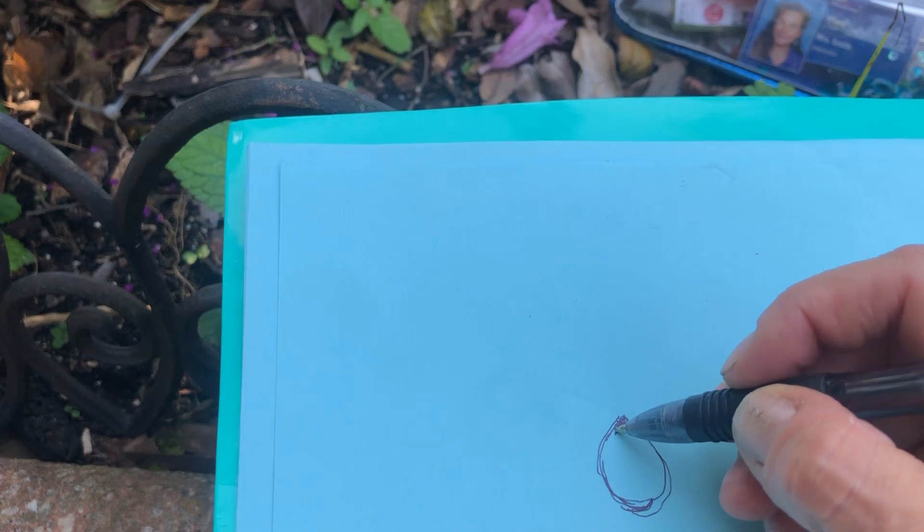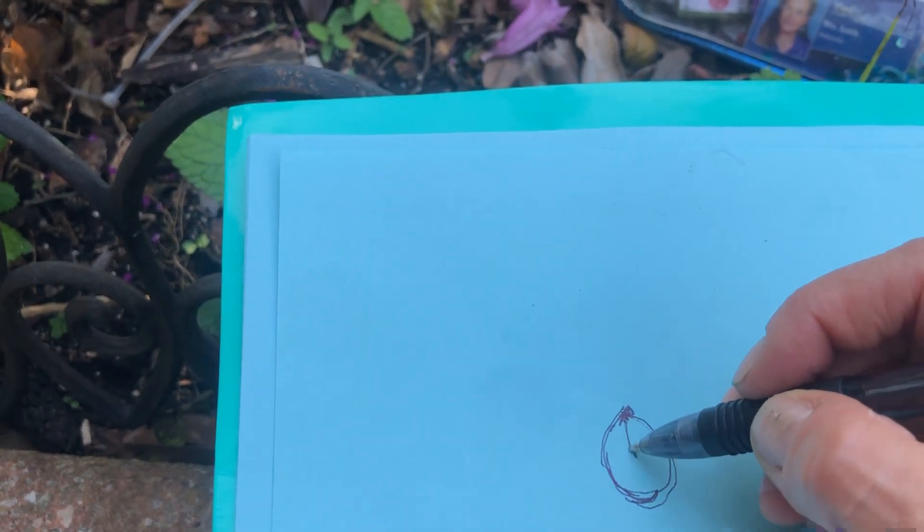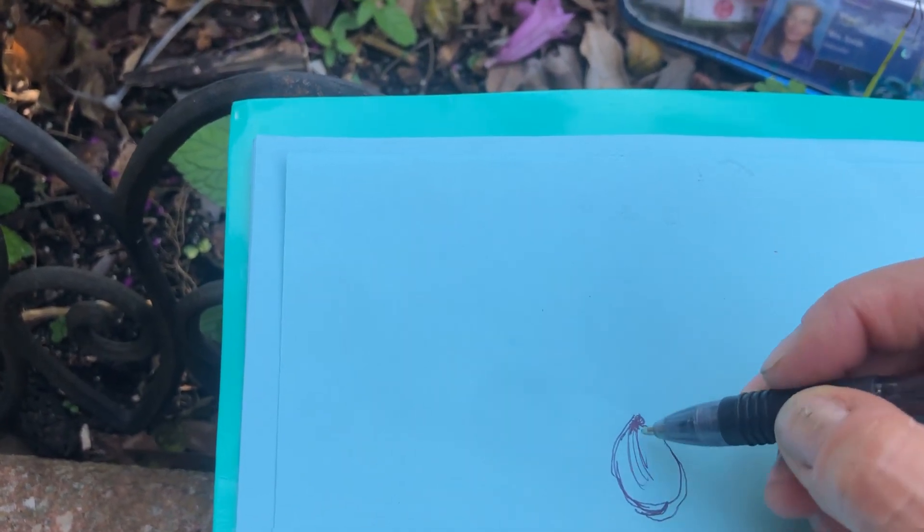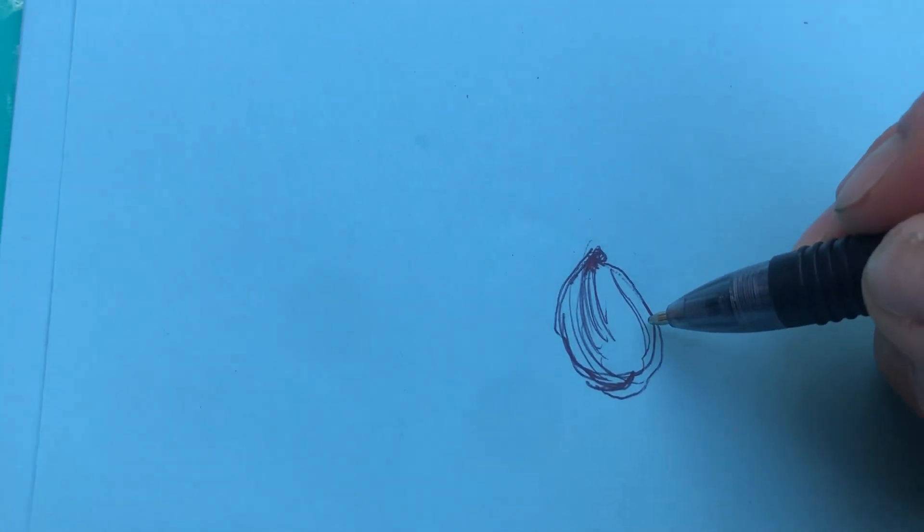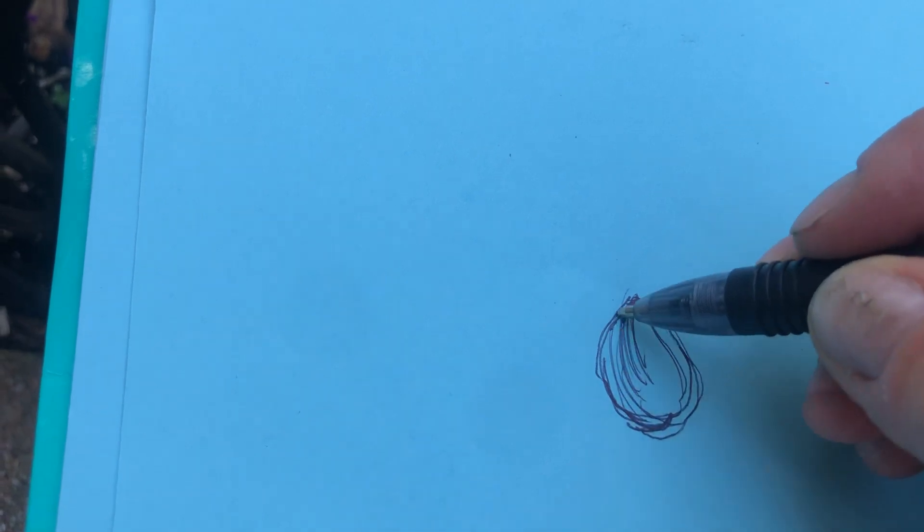Instead of doing shading or tone with a pencil, we're doing it with pens. You want to start where it grows and have the lines for your shading go around the curve or the contour with just one petal at a time. That whole time was one petal.